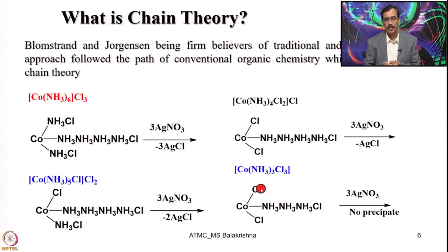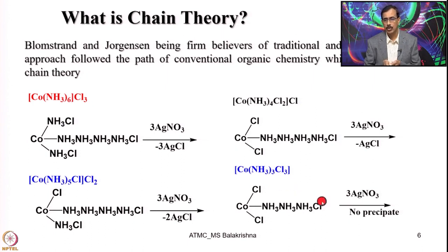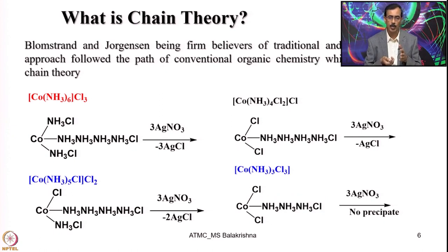In this case they failed. When they had 3 ammonia and 3 chloride in a neutral complex, there are no chlorides in the outer sphere. They expected at least 1 silver chloride precipitation, but that did not happen — when treated with silver nitrate there was no precipitation of silver chloride. So this chain theory miserably failed, but still they were proposing, arguing, and criticizing the systematic work carried out by Werner.